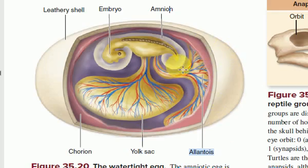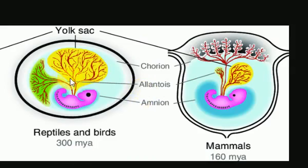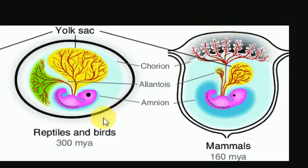The Allantois is a structure found in an egg. In the case of reptiles, it helps in respiration and excretion. In a reptile egg with its leathery shell, you can find the embryo, a yolk sac, a chorion, and the Allantois. In mammals, the Allantois helps in the development of the placenta.